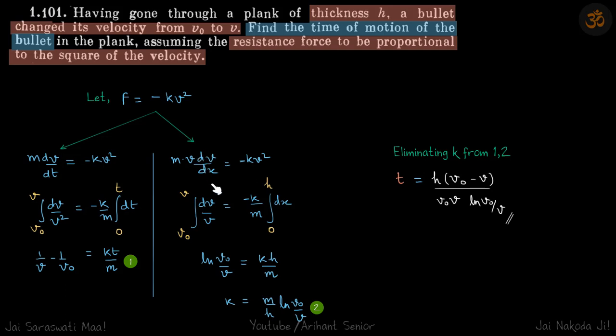Why V and X? Because H is given. And why V and T? Because we need to find T. So we'll integrate both of them and we'll get these two relations. From here we will eliminate k and get our answer.